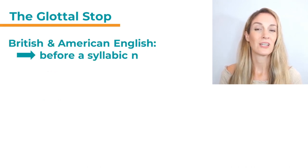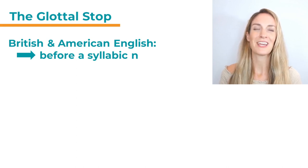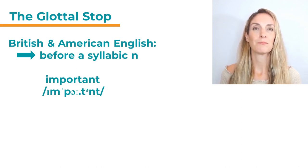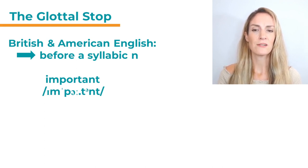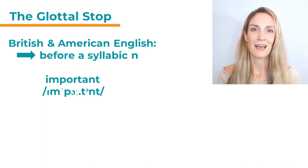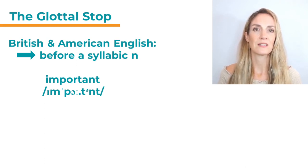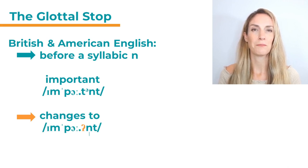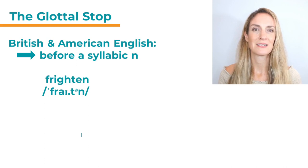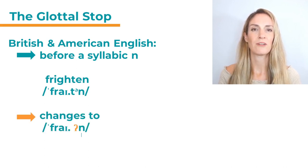In British and American English, we sometimes have the glottal stop before a syllabic N. If you don't know what a syllabic N is, check out my other video. For example, the word 'important' has three syllables — 'im', 'port', 'ant'. Sometimes the schwa is dropped and the N becomes a syllabic consonant, and the first T sound can change into a glottal stop: 'impor'ant'. Similarly, 'frighten' can change to 'frigh'en'.